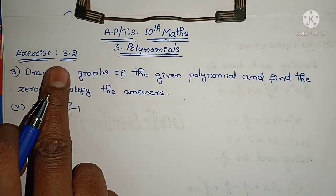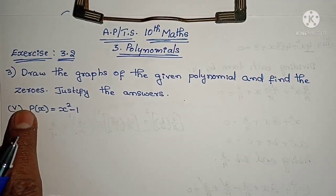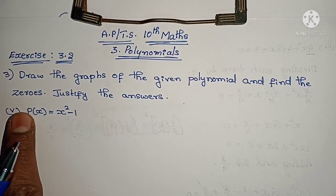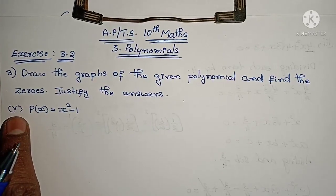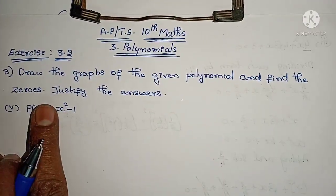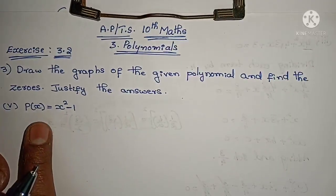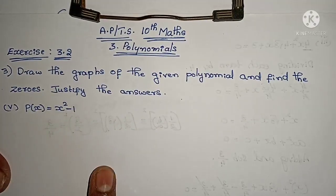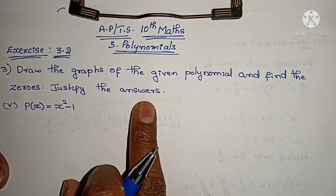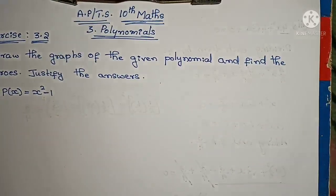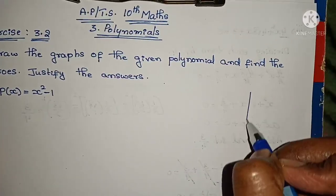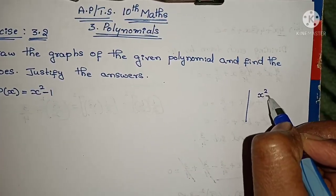Exercise 3.2, 3rd problem. In the 3rd problem, the first 4 subproblems were discussed in the last videos. Now let's look at the 5th subproblem. The question is: draw the graphs of the given polynomial and find the zeros. Justify the answer. We will do the factorization method.